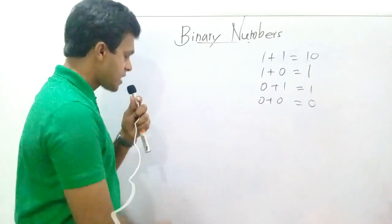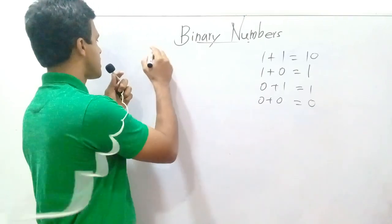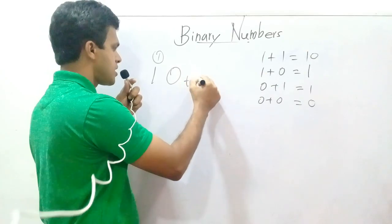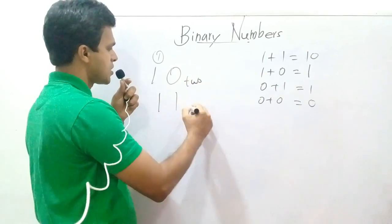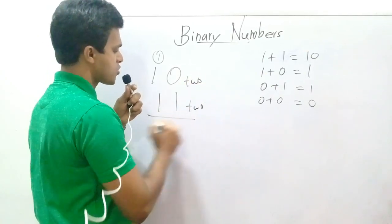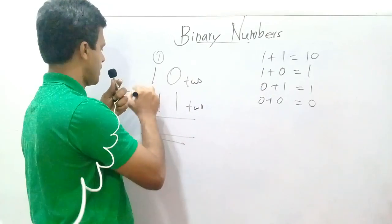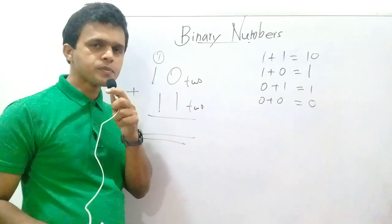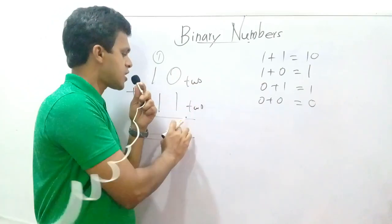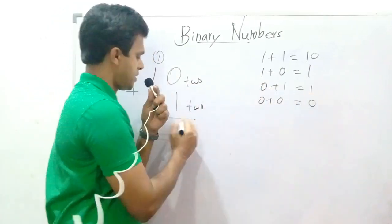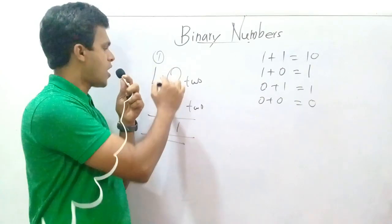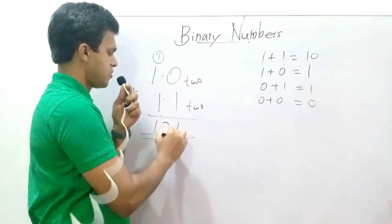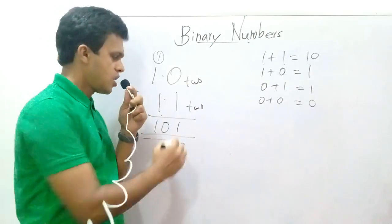Let's add these sums. First example: ten (10) base 2 plus eleven (11) base 2. Zero plus one is one; one plus one is one-zero (10).